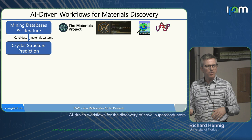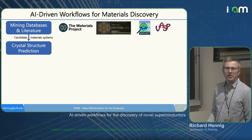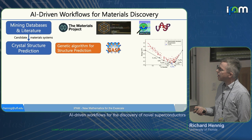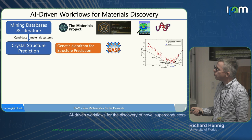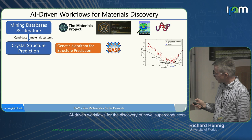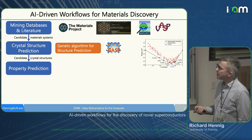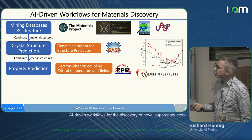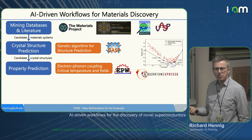We're interested in predicting what structures show up in those binary, ternary, quaternary systems. For that, we use genetic algorithms like GASP from our own group. It's a grand canonical algorithm that predicts a convex hull — in one case we found a new lithium-germanium compound below the convex hull of known compounds, a Zintel phase. Once we have candidate crystal structures, we jump into property prediction: electron-phonon coupling calculations using Quantum ESPRESSO and the EPW code, calculating critical temperatures as well as critical magnetic fields, which are a very important component for applying superconductors.